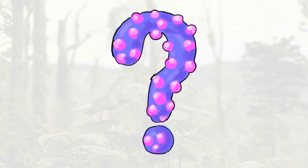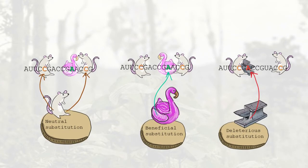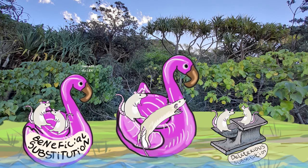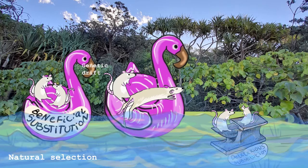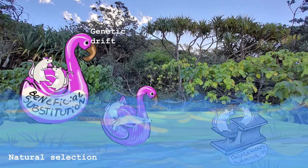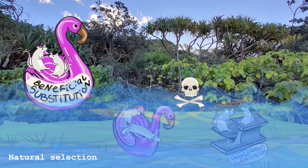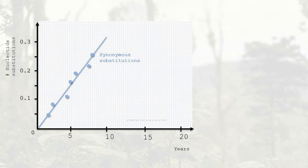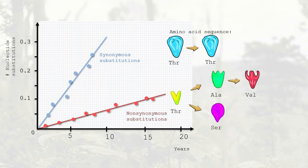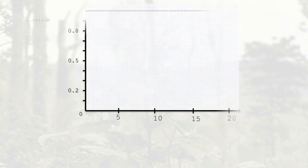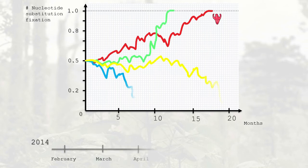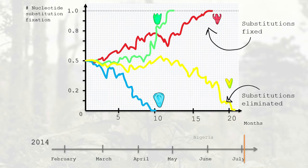You might ask: what is genetic hitchhiking? Let's imagine neutral substitutions to be rats. If there is a beneficial substitution in the genome, then the rats will survive unless they are eliminated by a stochastic process called genetic drift. They may also be eliminated due to the effect of co-occurring with deleterious substitutions. Nonetheless, because neutral substitutions are accumulated in a genome at a relatively constant rate, there is a linear relationship between neutral substitution numbers and elapsed time. This relationship is quintessential for the molecular clocking model, where tracking substitution fixation can uncover viral evolution and aid in contact tracing.